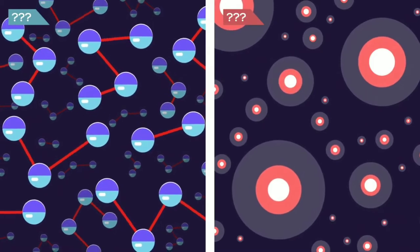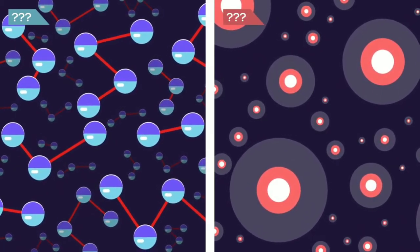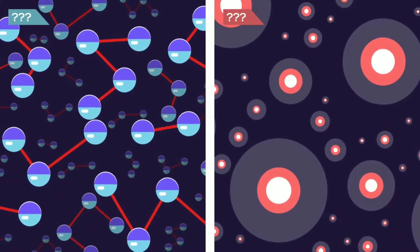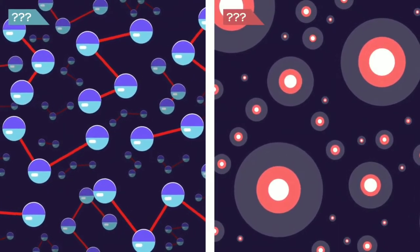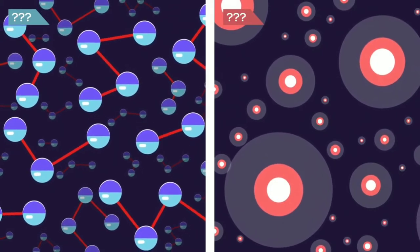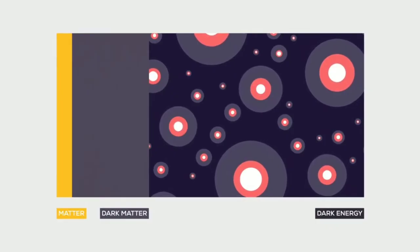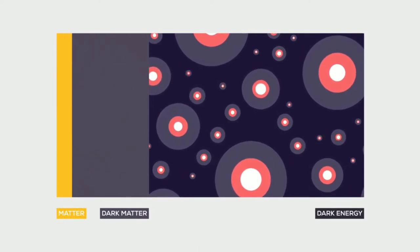We know how much dark energy there is because we know how it affects the universe's expansion. Other than that, it is a complete mystery, but it is an important mystery. It turns out that roughly 70% of the universe is dark energy, while dark matter makes up about 25%.